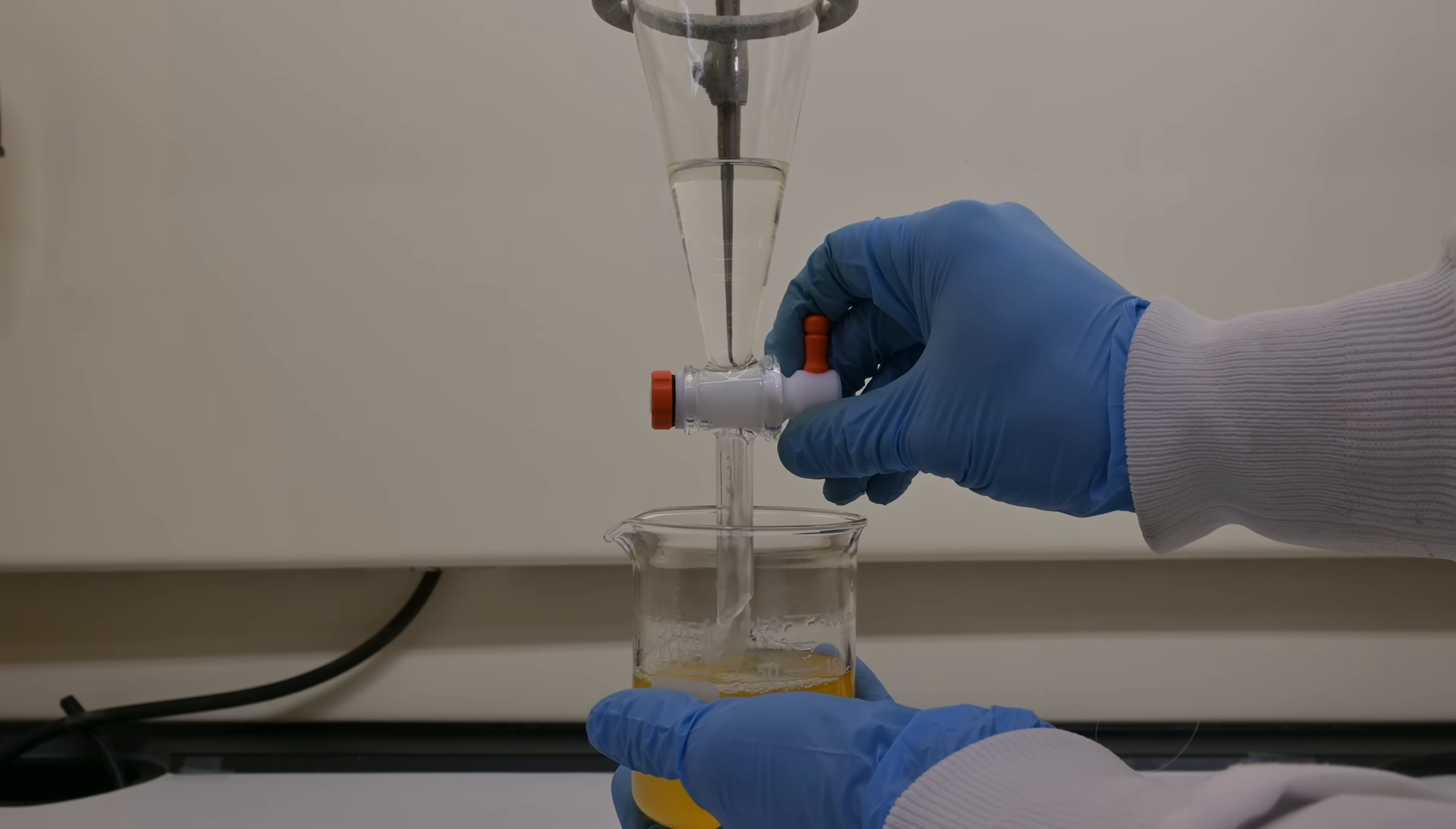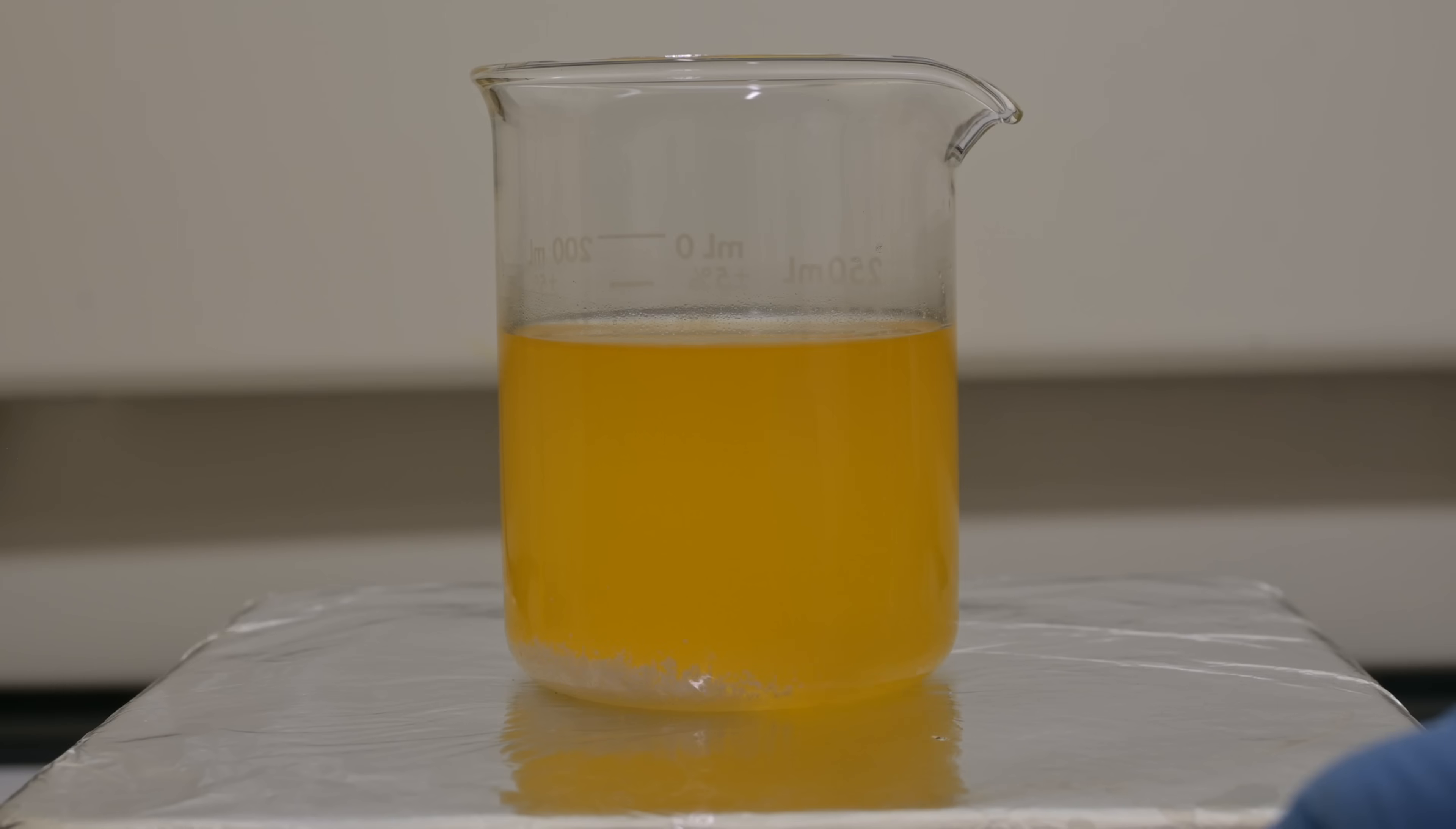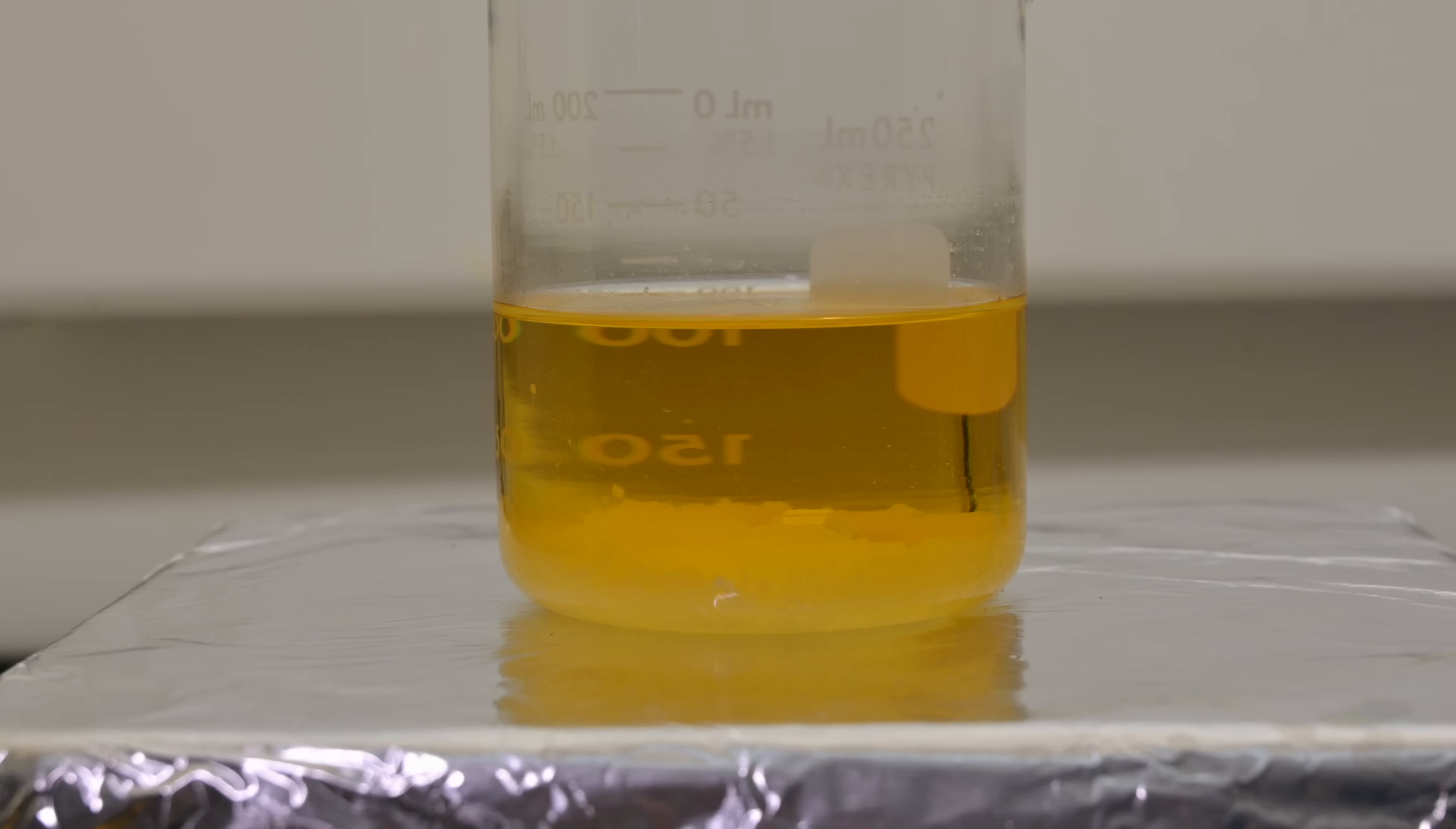I combine all benzene extractions and dry the pooled solution over about 10 grams of potassium carbonate. Potassium carbonate absorbs any residual water and neutralizes trace acids. I stir the mixture mechanically until the solution becomes completely clear. This tells me that the drying is complete. Now it's time to distill.